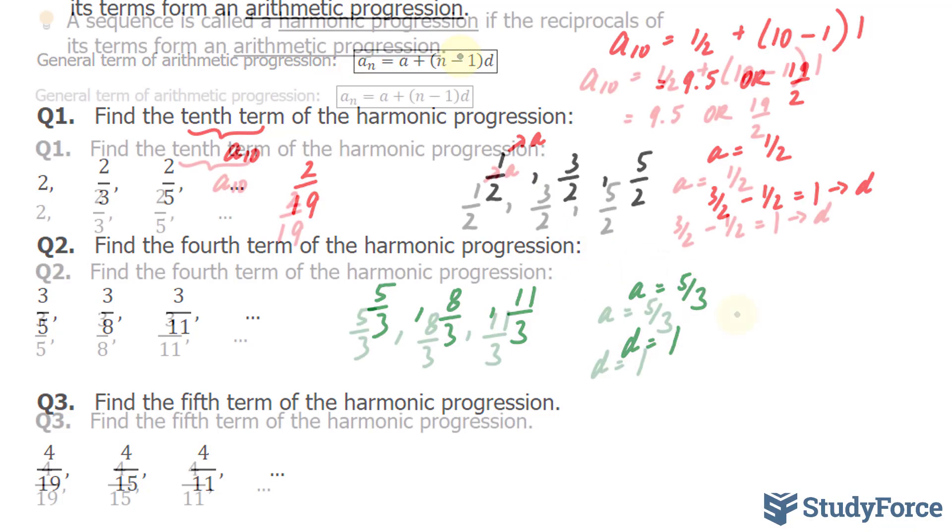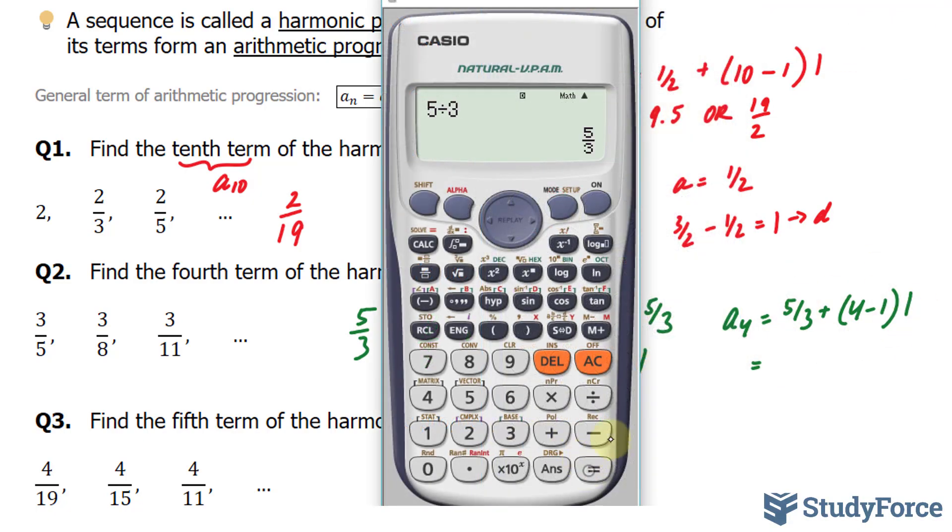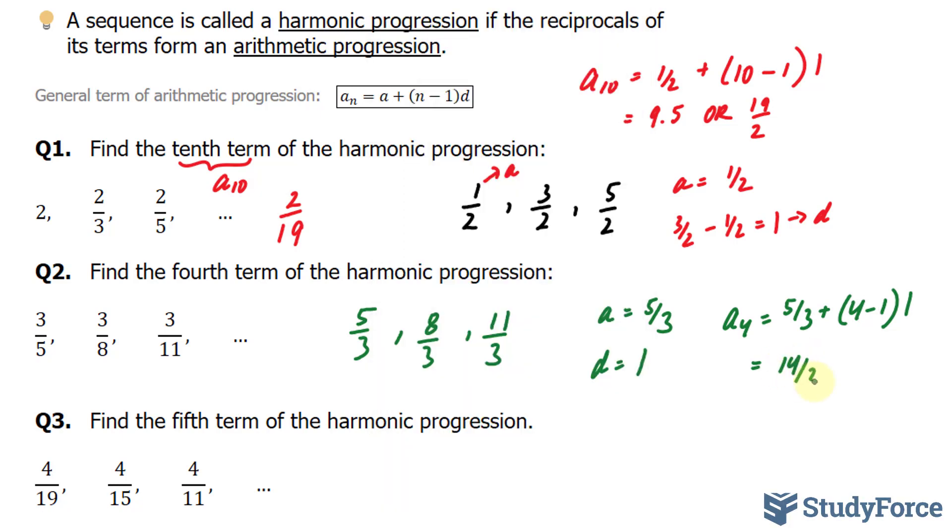Substituting these values into the formula, a subscript 4 is equal to 5 over 3 plus my fourth term minus 1 times the difference of 1. I'm going to use my calculator to evaluate this part. 5 over 3 plus 3 times 1, which is 3. I get 14 over 3. That's my fourth term.